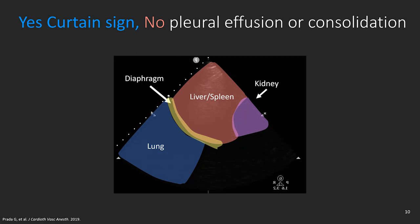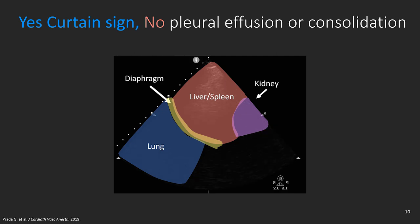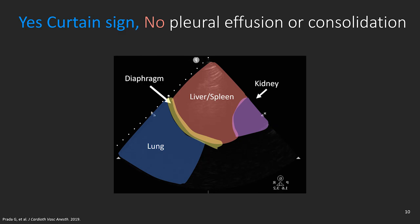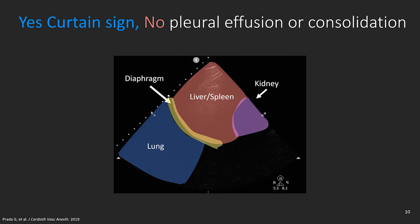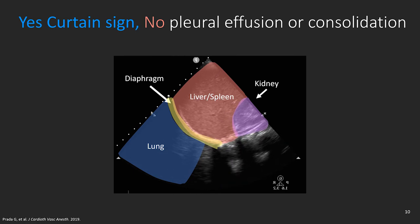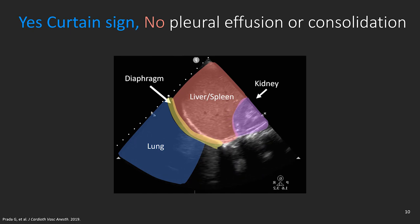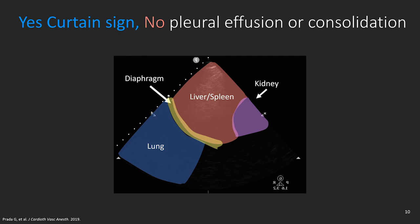If you have a pleural effusion, no matter how deep the patient inhales, the effusion will always be there between the lung and the diaphragm separating both, and you will always be able to see it. If you have a consolidation, you would see it as a bright area, not as the black shadow seen in a healthy air-filled lung. No air-filled lung means no black shadow, and no black shadow means no curtain sign.